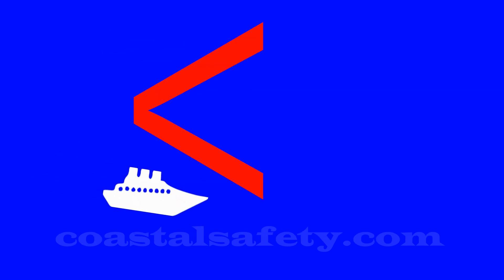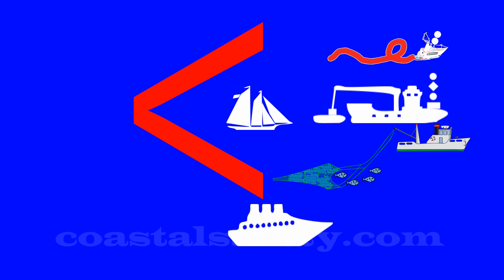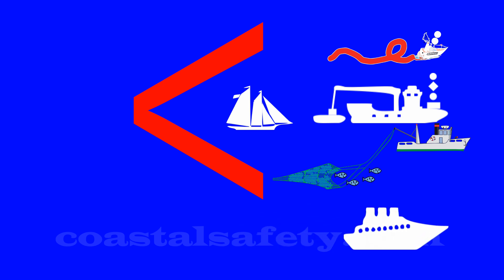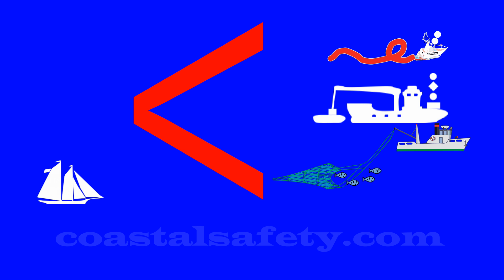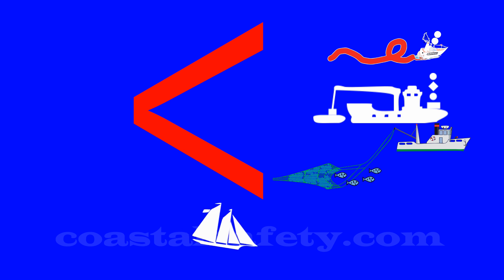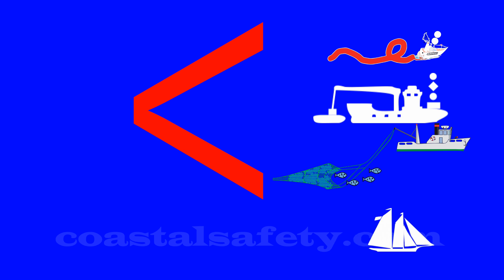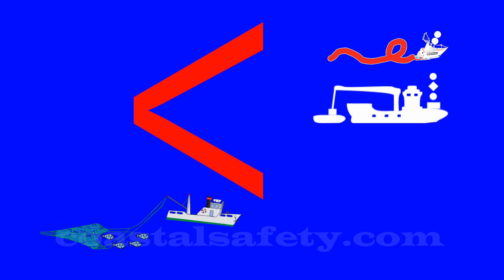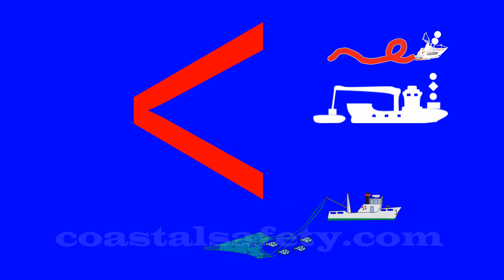Vessels not under command cannot control the boat — it could be steering or engine controls not working. Power-driven vessels keep out of the way of pretty much everybody that has some form of restriction. Sailing boats keep out of the way of fishing boats, vessels restricted in their ability to maneuver, and vessels not under command. Fishing boats, as much as possible, keep out of the way of vessels restricted in their ability to maneuver and vessels not under command.